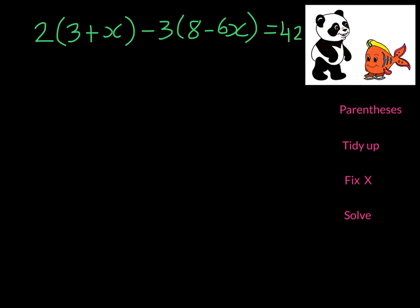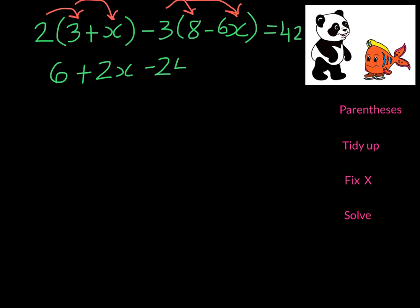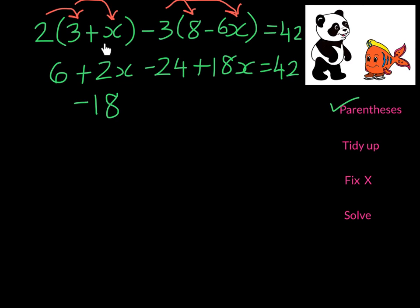In this example we see 2 parentheses, so we're going to distribute carefully with each number in front of each set of parentheses. So 2 times 3 gives me 6 and 2 times x gives me 2x. Negative 3 times 8 gives me negative 24 and 18x. So I've gotten rid of the parentheses. In this case I really have to tidy up because I have 6 and negative 24 — together they combine to give me negative 18. And I also have to tidy up 2x and 18x which gives me 20x. 42 is on the other side. So we've tidied up. We don't have to fix x because there's only one variable.